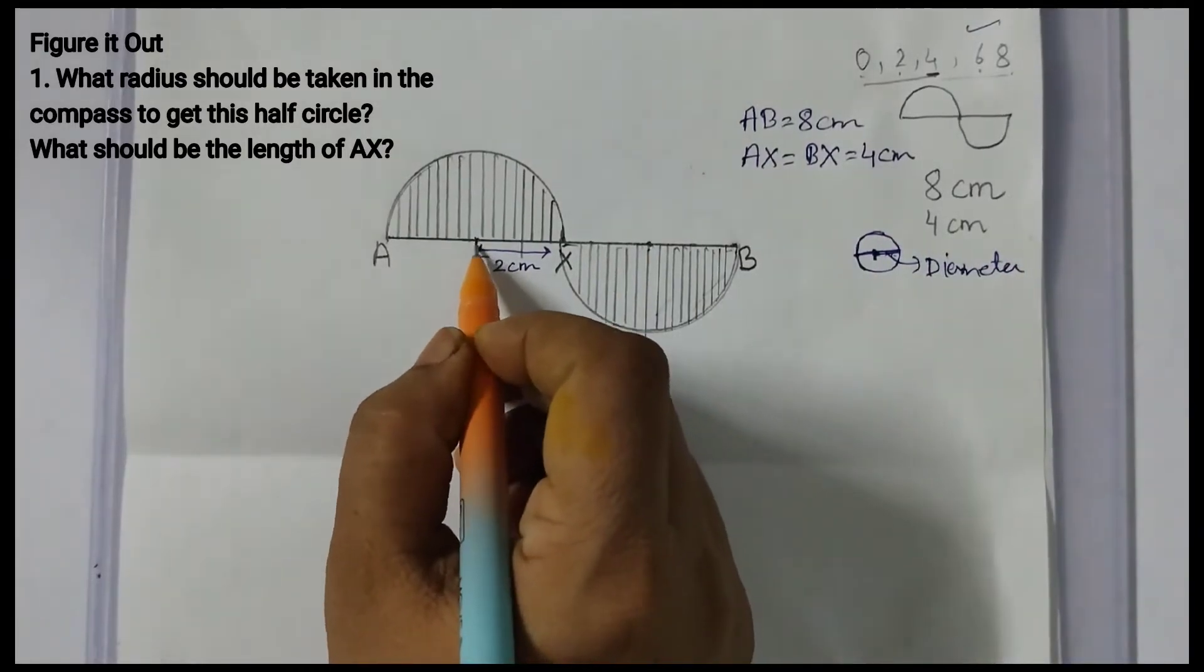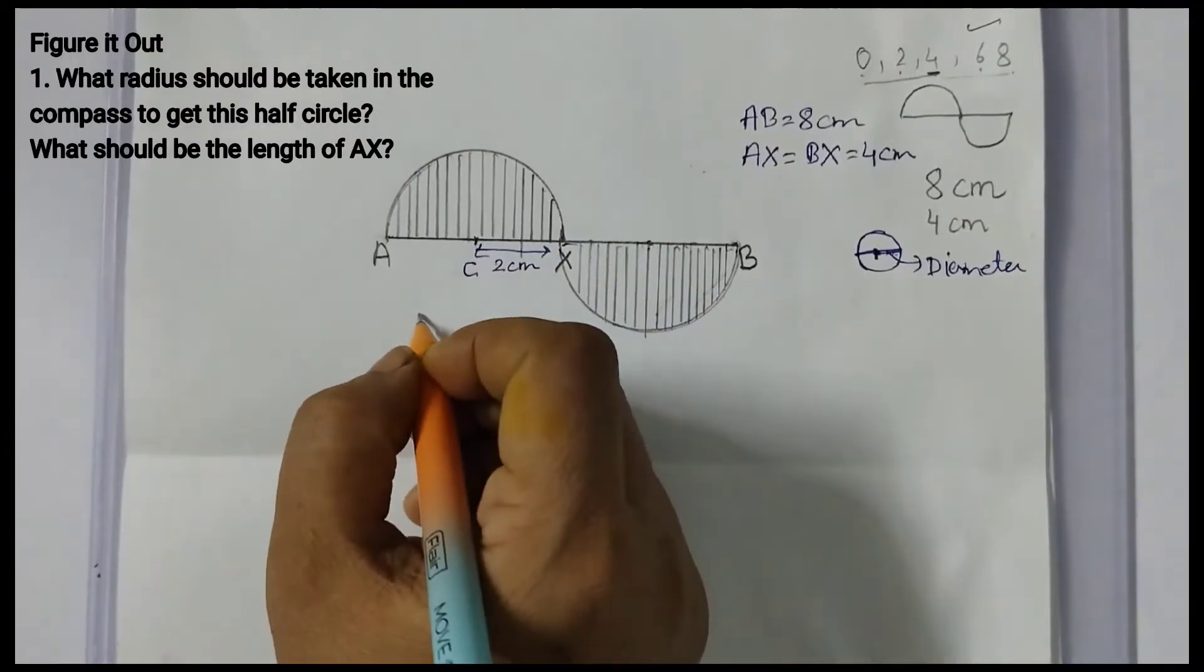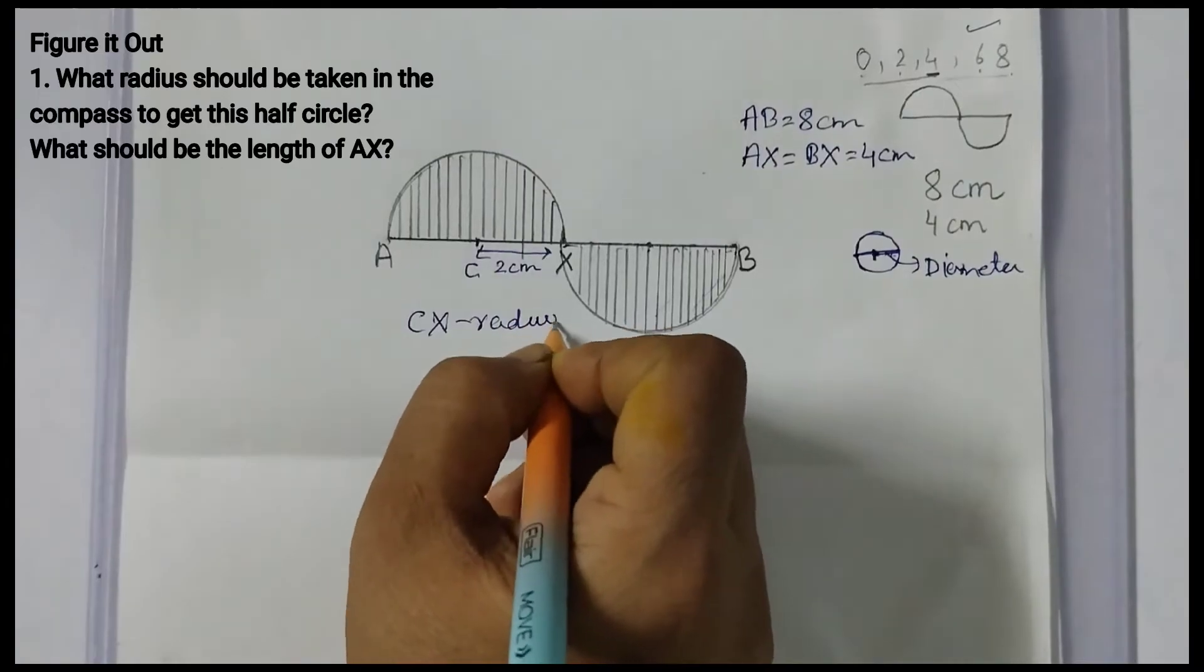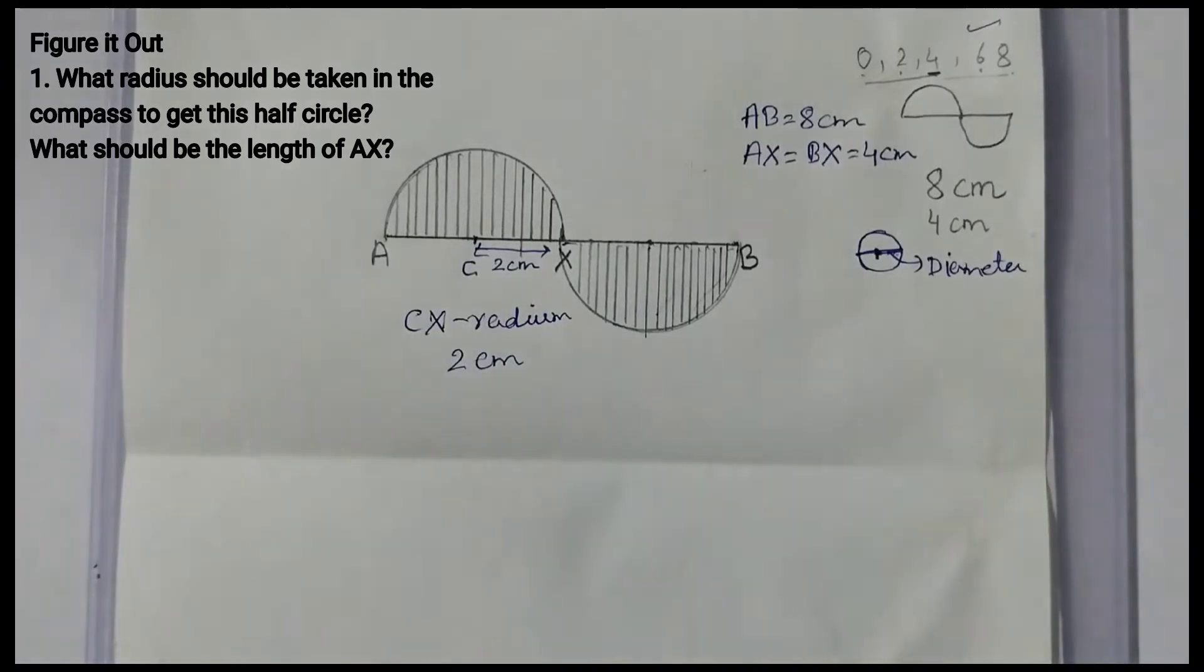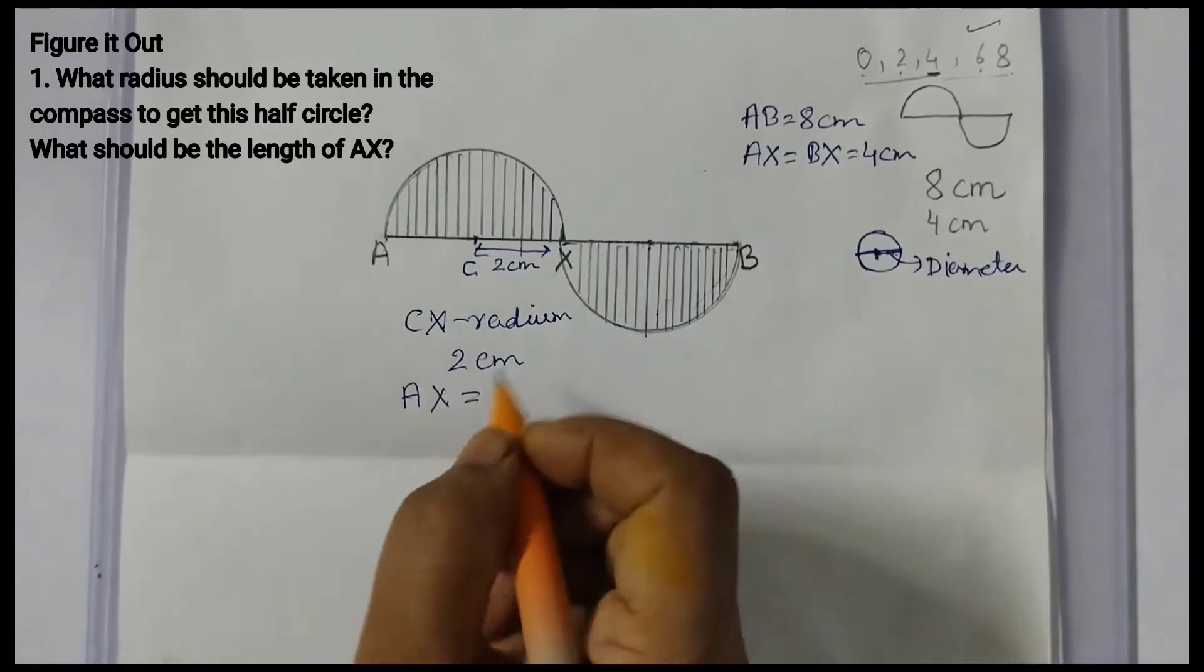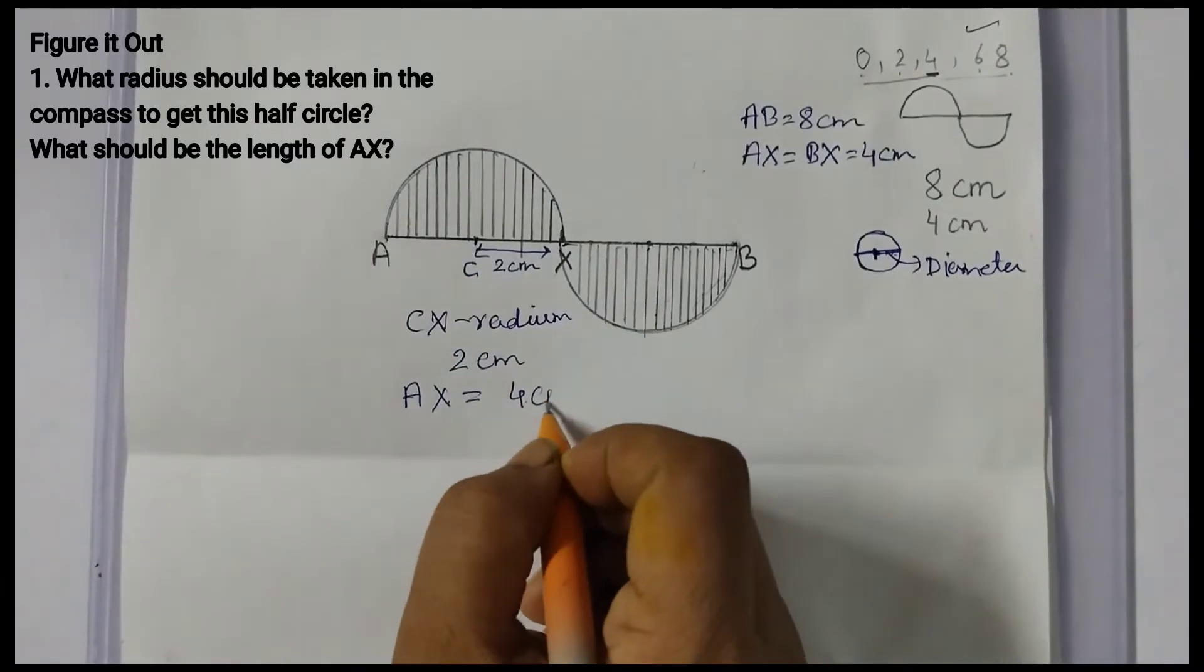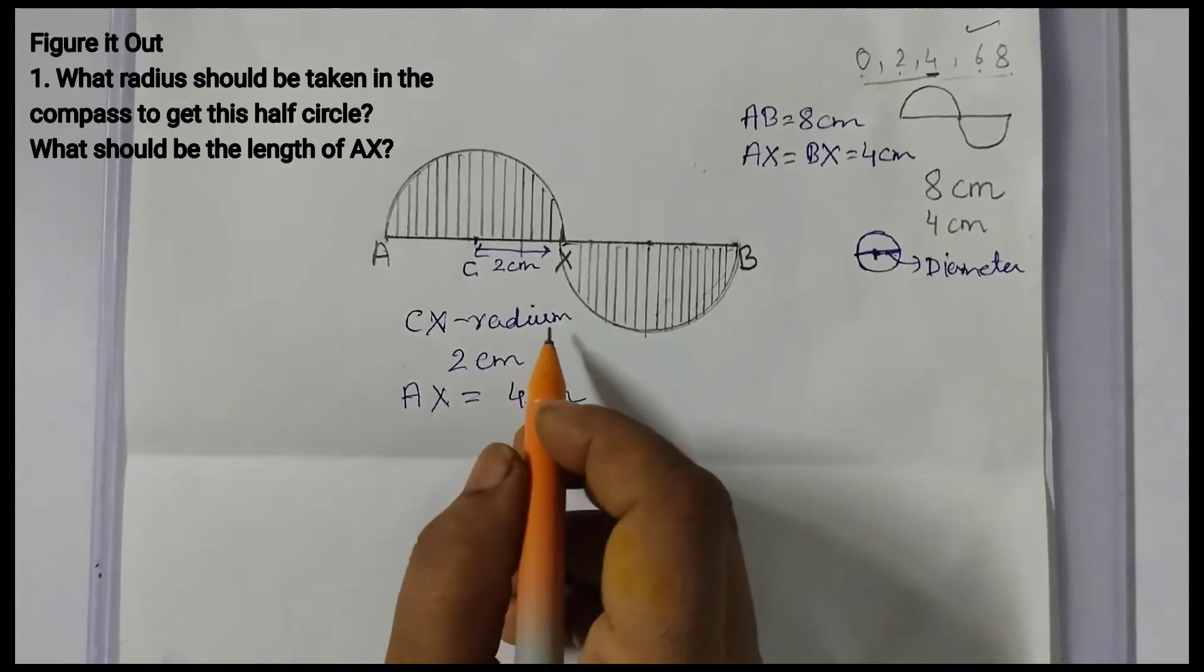Here you can see from this point, let's give it a name, say C. So CX is the radius and the length of the radius is 2 centimeters. What should be the length of AX? That is AX is the diameter. So AX is equal to 2 plus 2, that is 4 centimeter. The diameter is always double or twice of the radius.